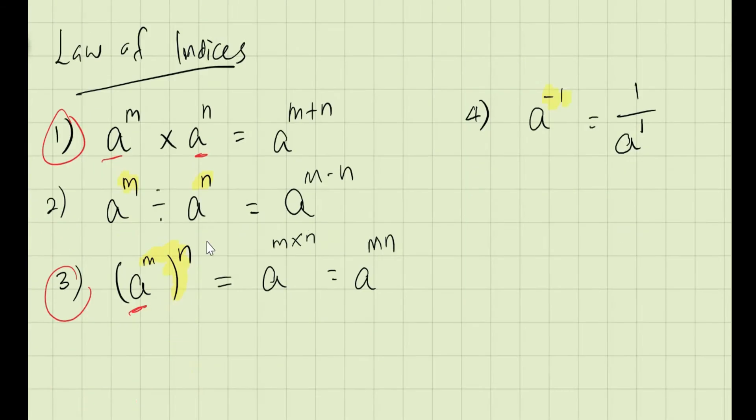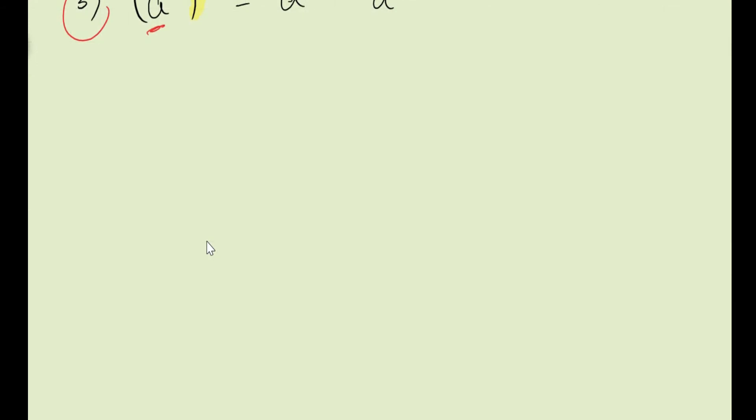Let's say we have 4 power 2 multiplied by 4 power 3. Now you can see that the base is actually 4. So what happens, according to the law of indices, they say that you can actually add the power. So when you add the power you have 4 to the power of 5.